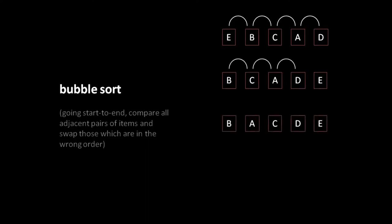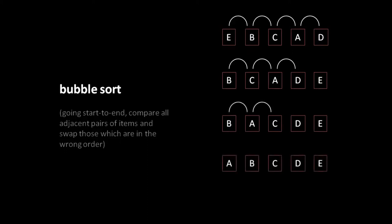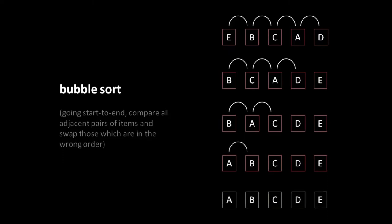We now do a second pass, but with one less comparison. We compare B against C — correct order, no swap. Then C against A — out of order, so we swap, giving A in second position and C in third. Then C against D — correct order, no swap. After the second pass we have B, A, C, D, E. In the third pass we compare B against A — out of order, we swap — then B against C — in order, no swap. The algorithm doesn't know that in some cases it might finish early; it all depends on the particular unordering of the list at the start.